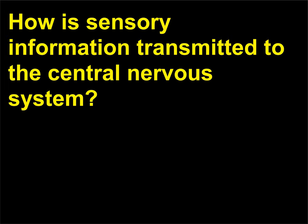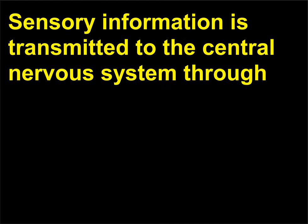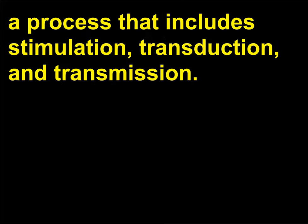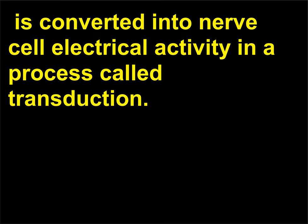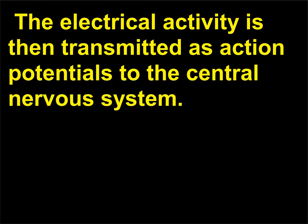How is sensory information transmitted to the Central Nervous System? Sensory information is transmitted to the Central Nervous System through a process that includes stimulation, transduction, and transmission. A physical stimulus (e.g., light or sound pressure) is converted into nerve cell electrical activity in a process called transduction. The electrical activity is then transmitted as action potentials to the Central Nervous System.